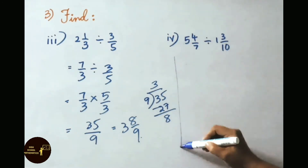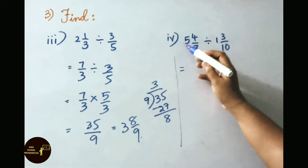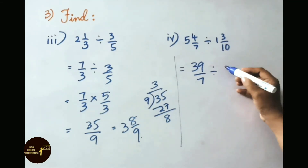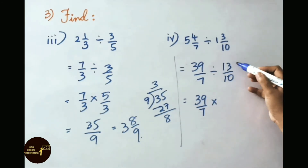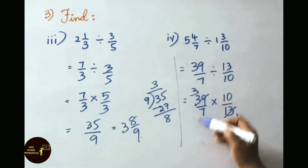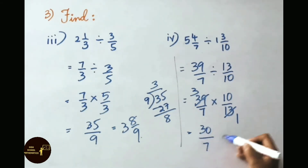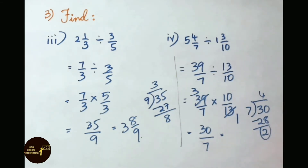Next sum: 5 and 4 by 7 divided by 1 and 3 by 10. Convert both mixed fractions to improper fractions: 7 fives are 35 plus 4, that is 39 by 7. 10 ones are 10 plus 3, that is 13 by 10. So we have 39 by 7 into the reciprocal of 13 by 10, which is 10 by 13. Cancel: 13 into 39 gives 3. Multiply the numerators: 3 into 10 is 30. Multiply the denominators: 7 into 1 is 7. Simplify: 7 fours are 28, remainder 2. So the answer is 4 and 2 by 7.